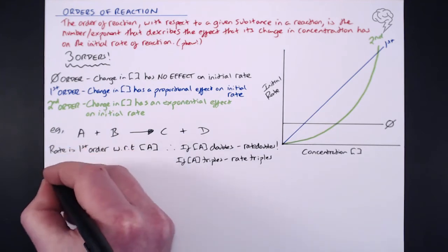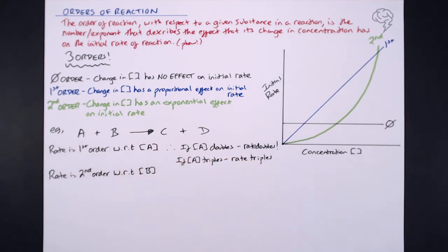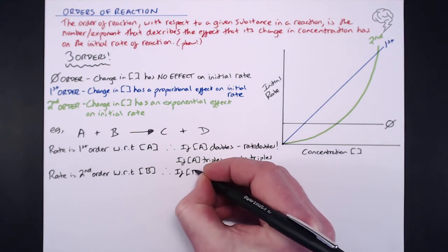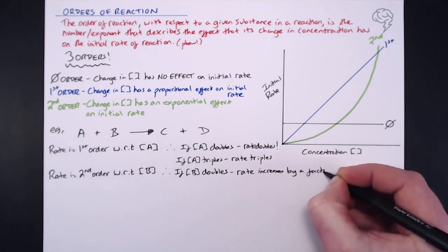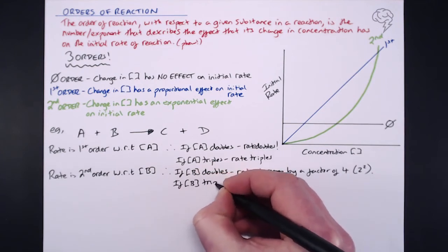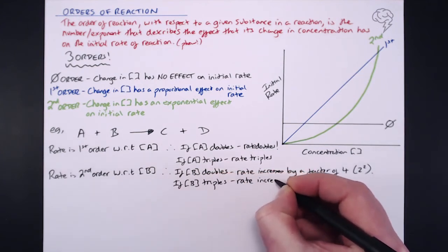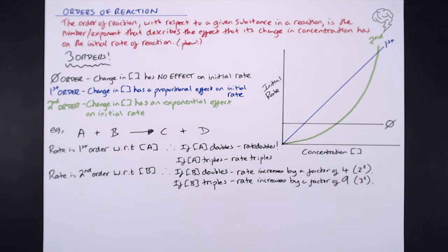Likewise, let's say the rate is second order with respect to the concentration of B. So if the concentration of B doubles, the initial rate increases by a factor of four — it's exponential — two squared, so a factor of four. Likewise, if we increase the concentration of B by three times, so if concentration of B triples, the rate increases by a factor of nine, because that's three squared. Even if the concentration of B has gone up by 1.6, the rate is going to increase by a factor of 1.6 squared.